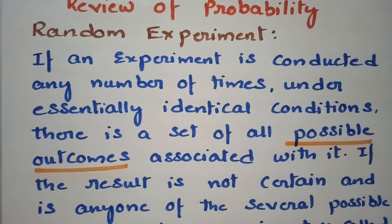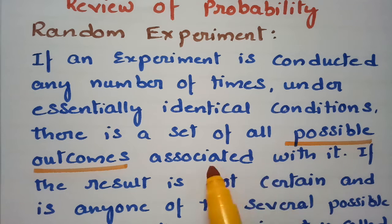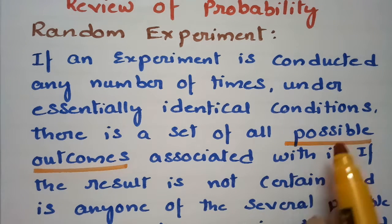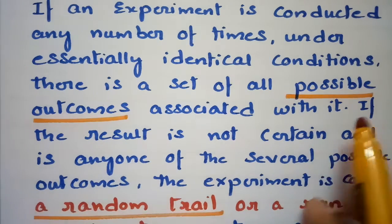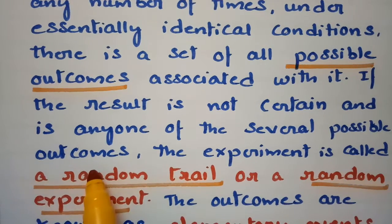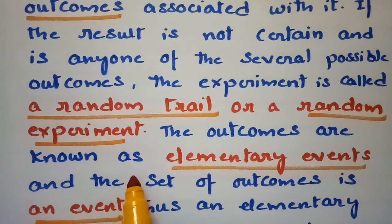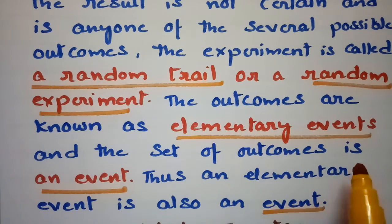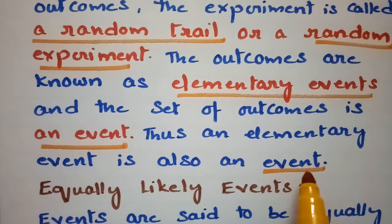The definition is clear: if an experiment is conducted any number of times under essentially identical conditions, there will be a set of possible outcomes associated with it. The result is not certain — it is a probability that we cannot guess the solution. The result is any one of the several possible outcomes, so it is a random trial. The outcomes are known as elementary events, the set of outcomes is an event, and thus an elementary event is also an event.